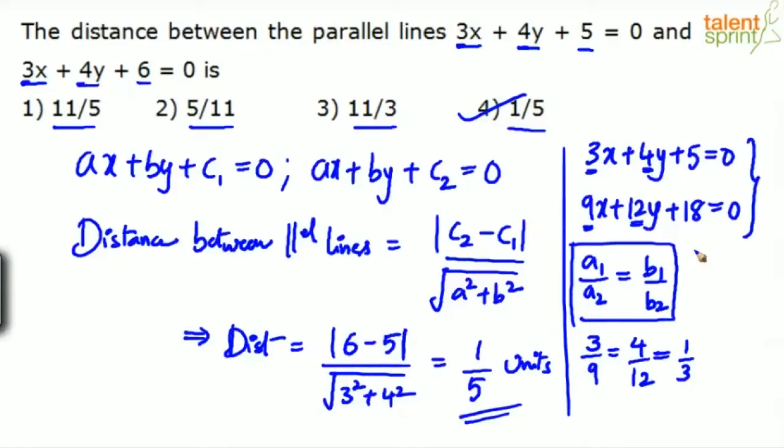In this case, how do you measure the distance? The two lines are parallel, but to find out the distance, the two lines have to be brought to the format ax plus by plus c1 equals 0 and ax plus by plus c2 equals 0. So divide equation 2 by 3. This becomes 3x, this becomes 4y, and 18 divided by 3 gives you 6. Now both are in the required format: 3x plus 4y plus 5 and 3x plus 4y plus 6. Now you can apply the same formula, which will give you 1 by 5 units.